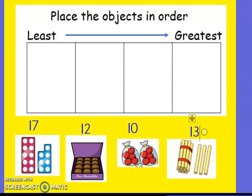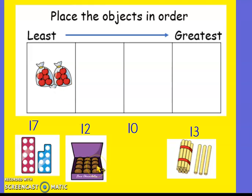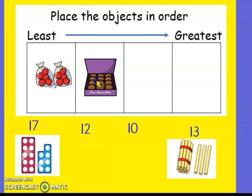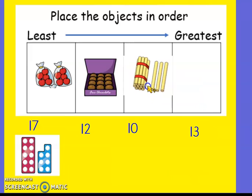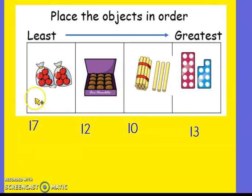So let's have a look — which one is the least? Which of those is the smallest, the lowest, the least number? It's ten, isn't it? So we'll put the apples in the least box. Which is the next biggest? Seventeen isn't the next biggest. So is it twelve or is it thirteen? It's those twelve yummy chocolates, isn't it? Ten, eleven, twelve. And then it's thirteen. So the greatest number there is seventeen. So we've got ten, twelve, thirteen, seventeen.